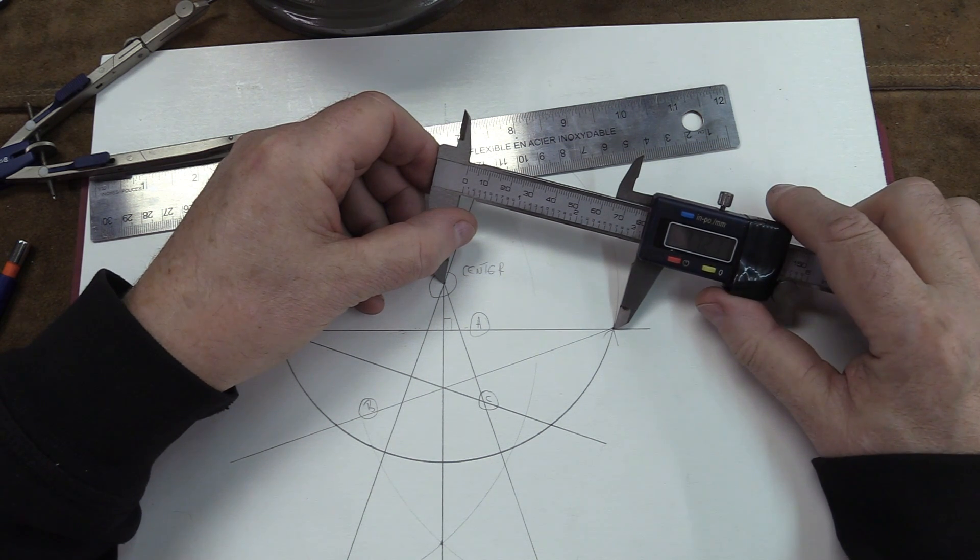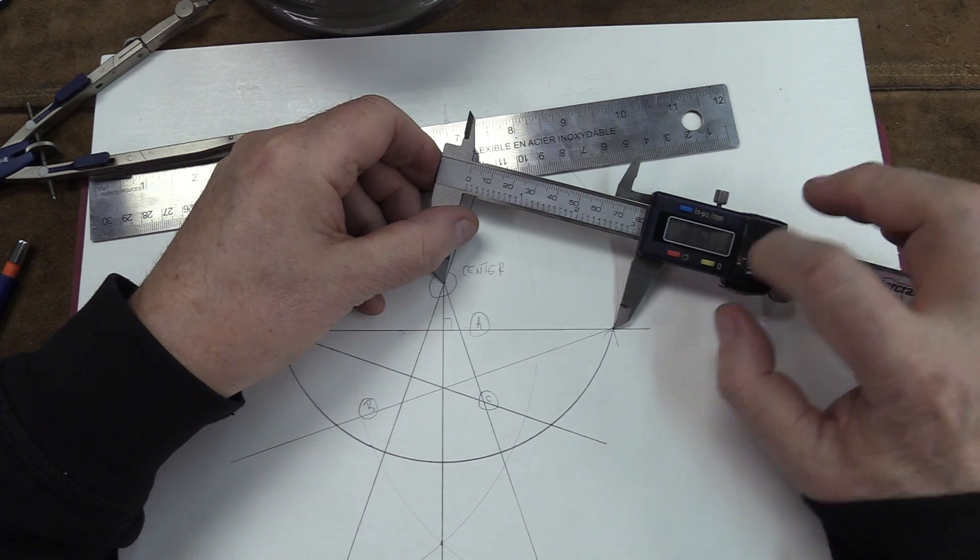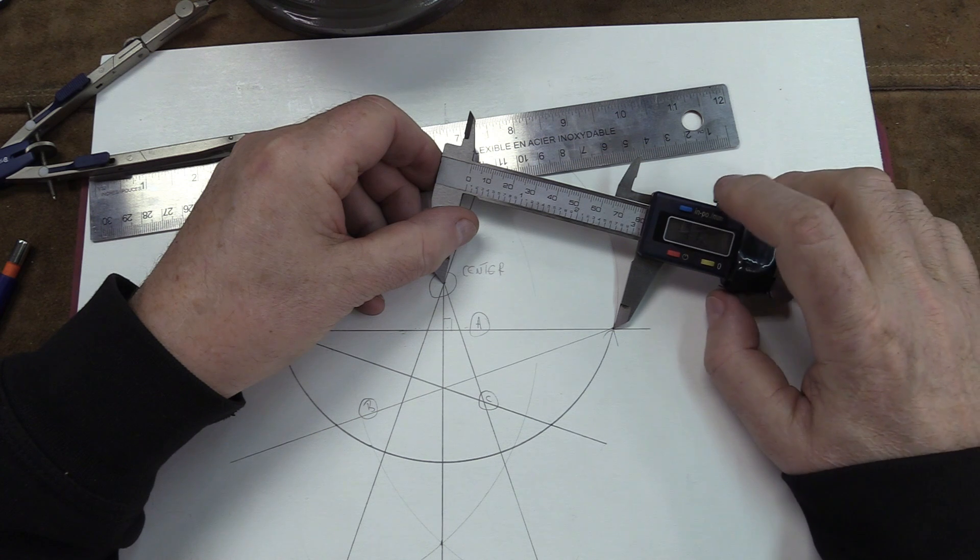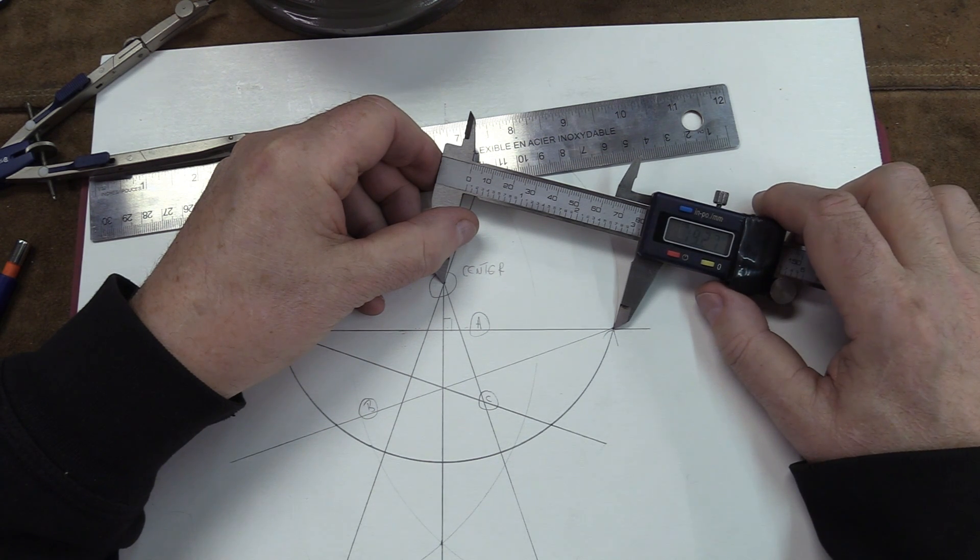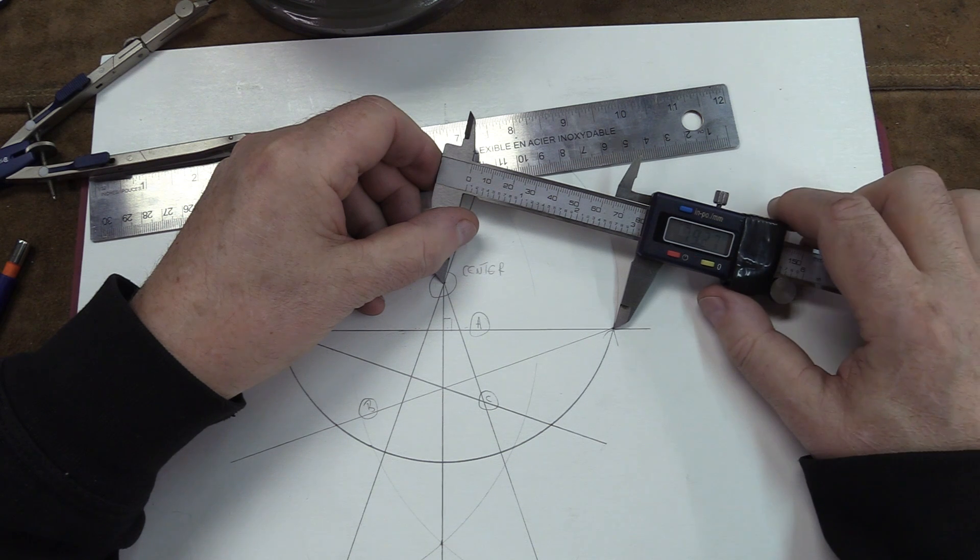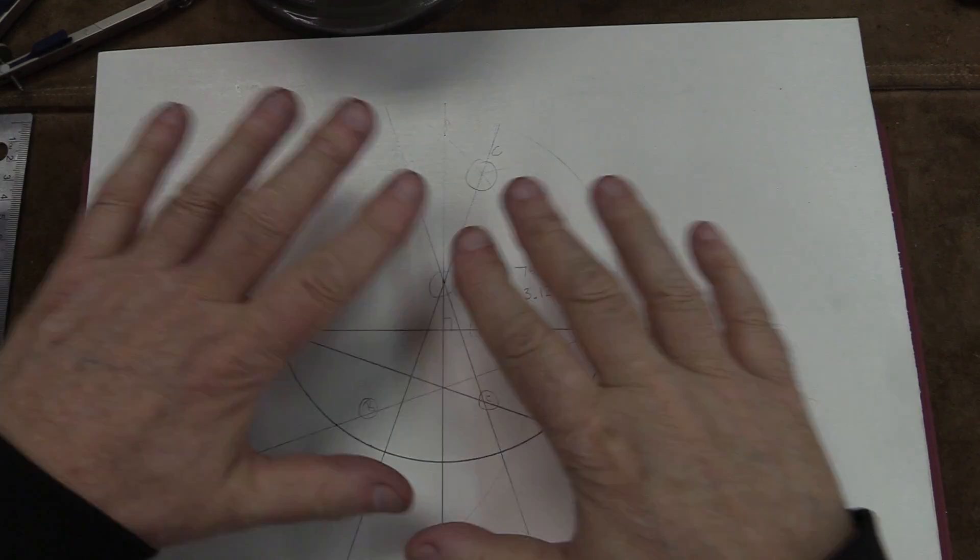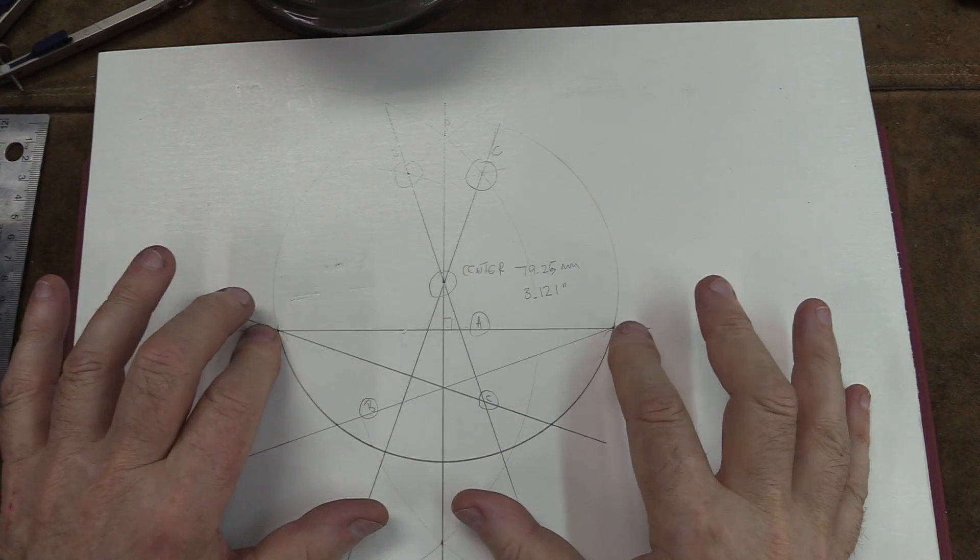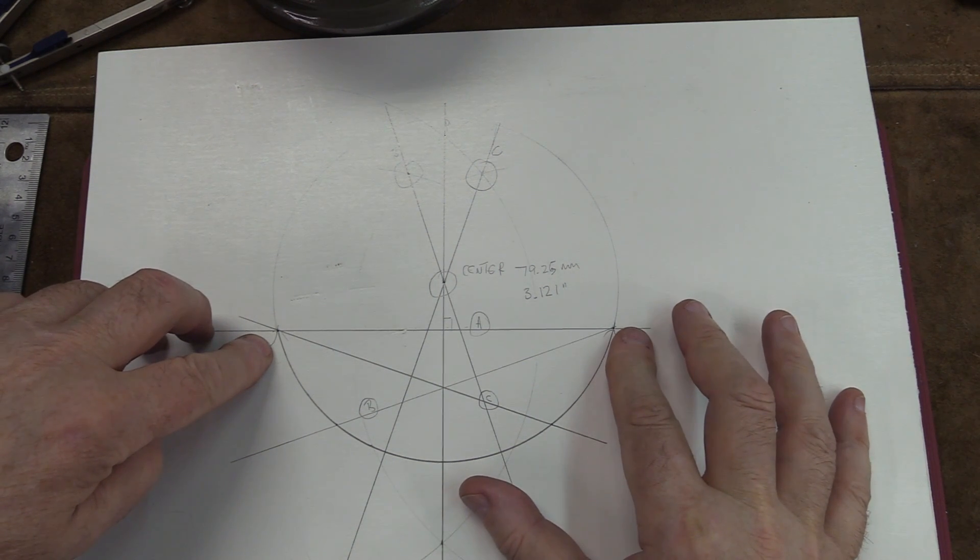So if we see pretty well on the caliper here, we're 3 inches, 121 thousandths or metric, 79.7 millimeters. So this is the radius. Okay, now that we got this, how does this help us?